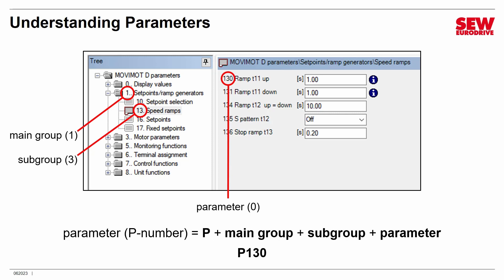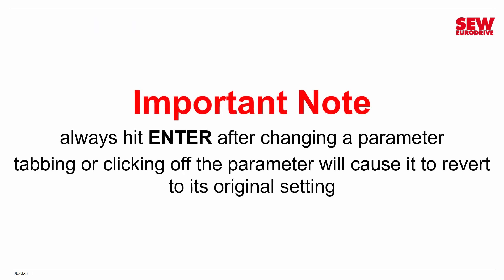So if somebody tells you to go to a particular parameter, take the first digit — that points you to the group. The second points you to the subgroup within that group, and the third points you to the individual parameter. Not too complicated. Also, whenever you're changing parameters, you must always hit Enter after changing a parameter. If you tab or click off to another parameter, the change will not stick and the parameter will revert to its original setting. That's true with almost all SEW EuroDrive software products.